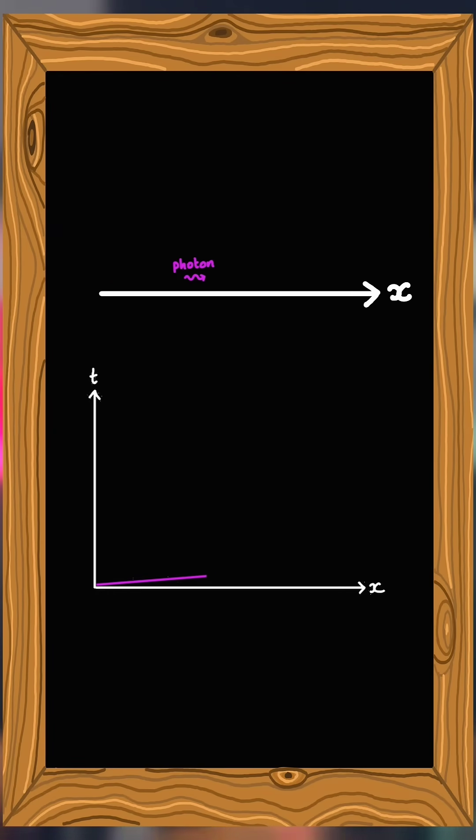For example, let's think about how we would plot the motion of a photon of light emitted from the origin at t is equal to zero. This is a really shallow line on our graph.